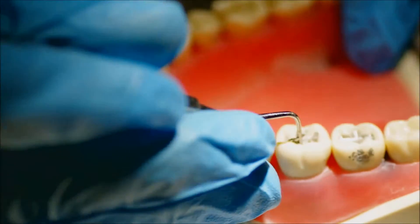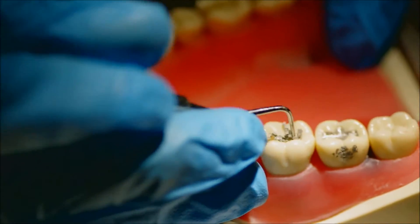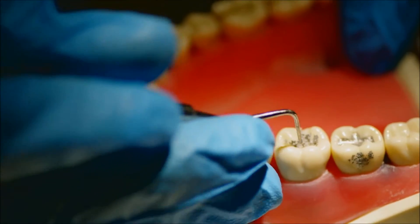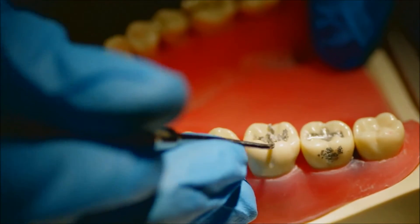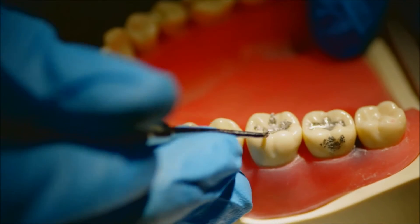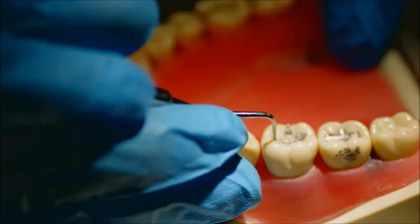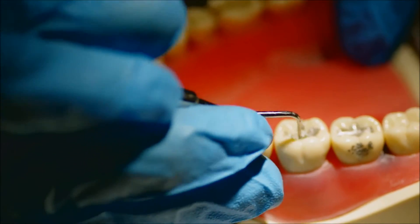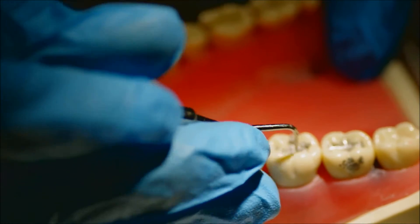You pick it up with your amalgam transporter and place a small amount in the tooth, and what you can see me doing right now is condensing that first small amount with a small condenser. You don't want to fill up your entire prep volume.